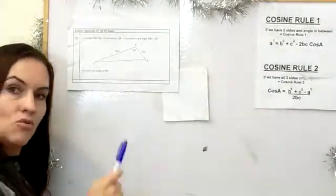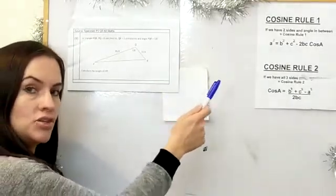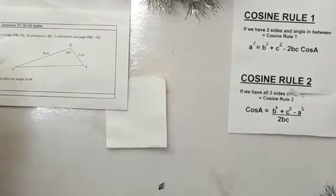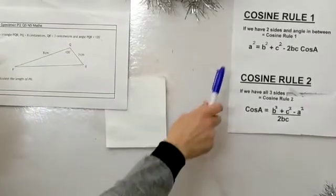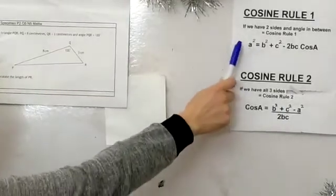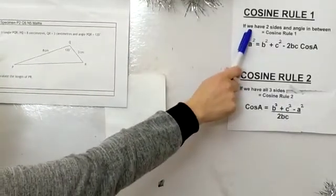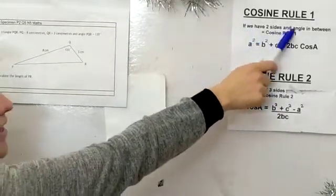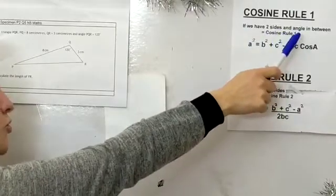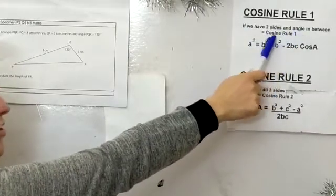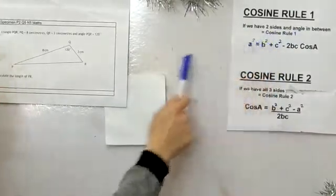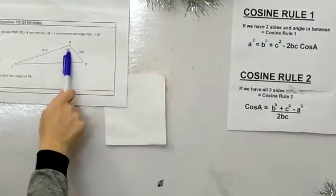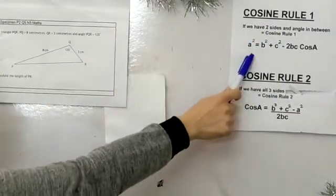We need to decide which rule to use. It says if we have two sides and the angle in between — which we do — then it's cosine rule 1, because we have the two sides and the angle in between.